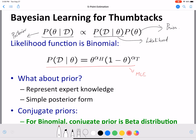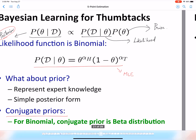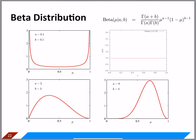The prior is used to represent expert knowledge, and in addition to that it should aid us in arriving at a simple posterior form so that we can use it effectively to estimate theta. We want to choose a prior such that we get a simpler posterior form. Such a prior is called a conjugate prior. For a binomial distribution, the conjugate prior is a beta distribution.